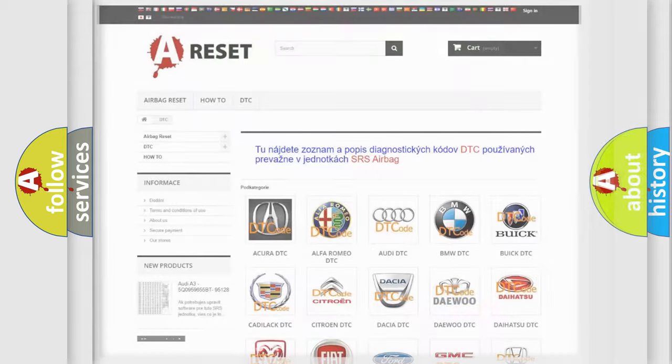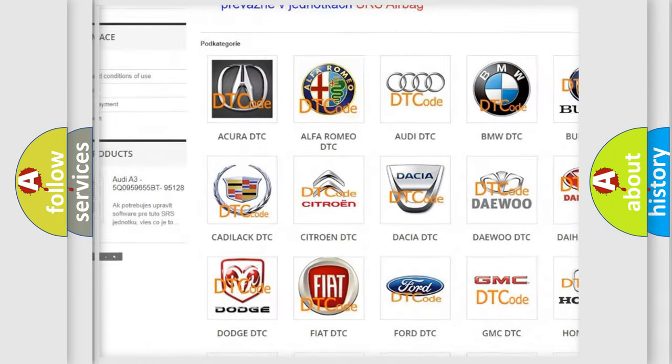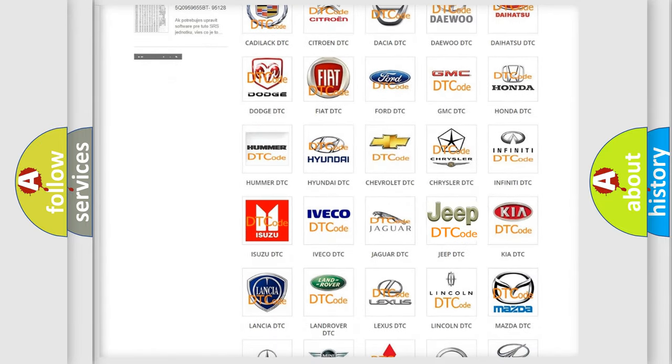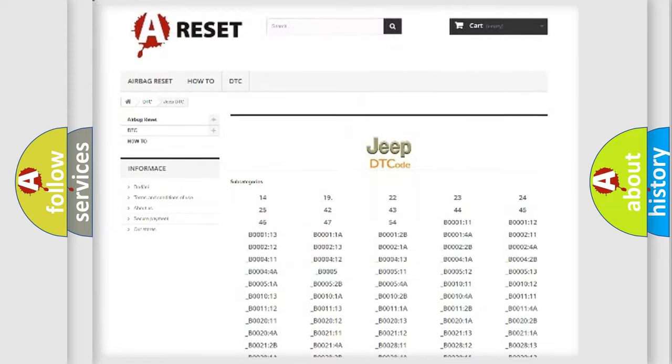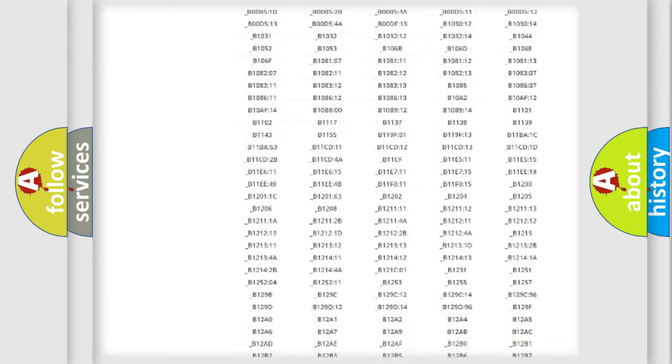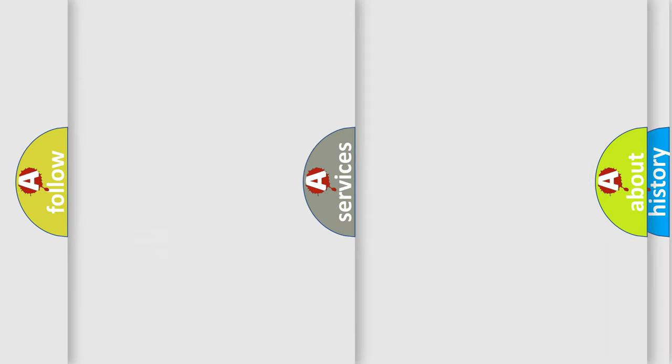Our website airbagreset.sk produces useful videos for you. You do not have to go through the OBD2 protocol anymore to know how to troubleshoot any car breakdown. You will find all the diagnostic codes that can be diagnosed in Jeep vehicles, and also many other useful things.